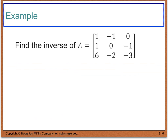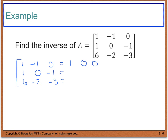For our only example in this section, we are going to find the inverse of matrix A. Matrix A is a 3 by 3 — 3 rows and 3 columns — so it is a square matrix and we can attempt this. We write the doubly augmented matrix: 1, negative 1, 0; 1, 0, negative 1; 6, negative 2, negative 3, joined with the identity matrix: 1, 0, 0; 0, 1, 0; 0, 0, 1.